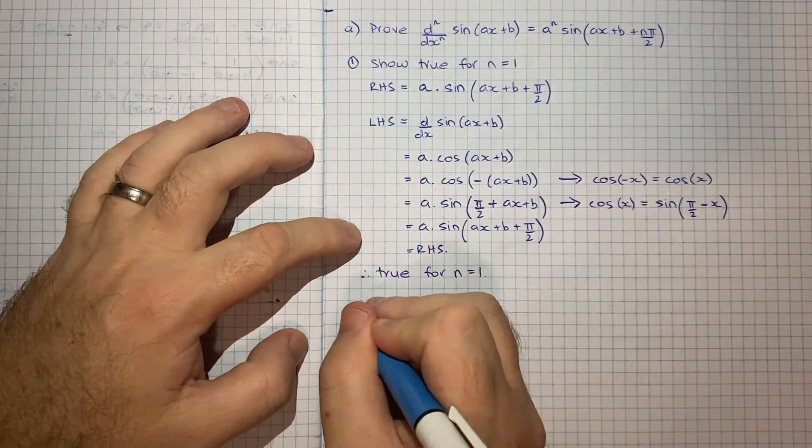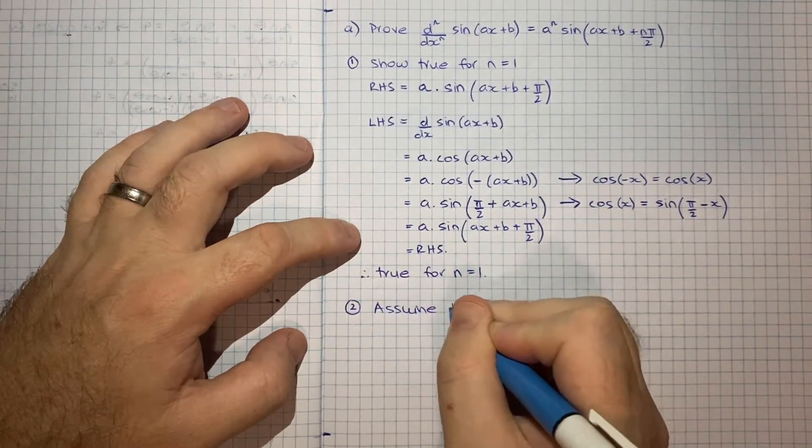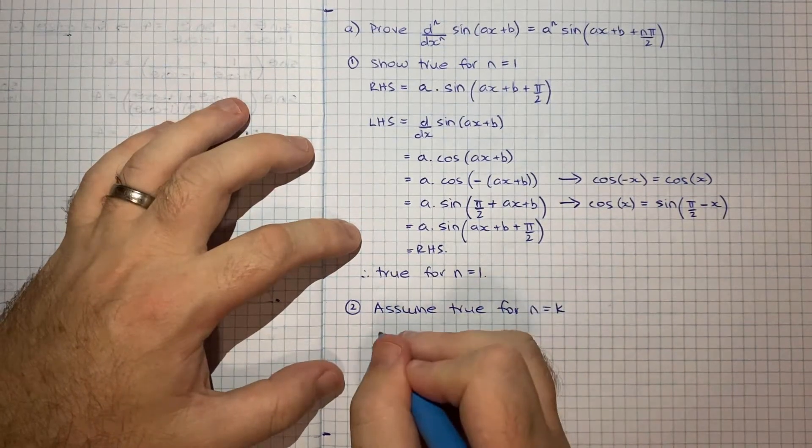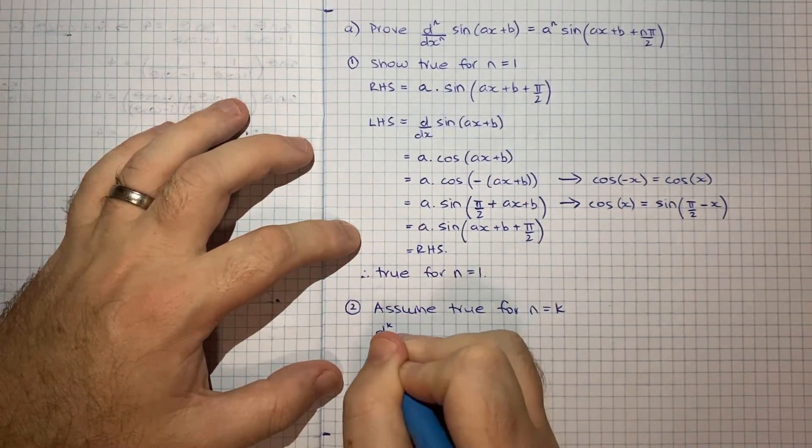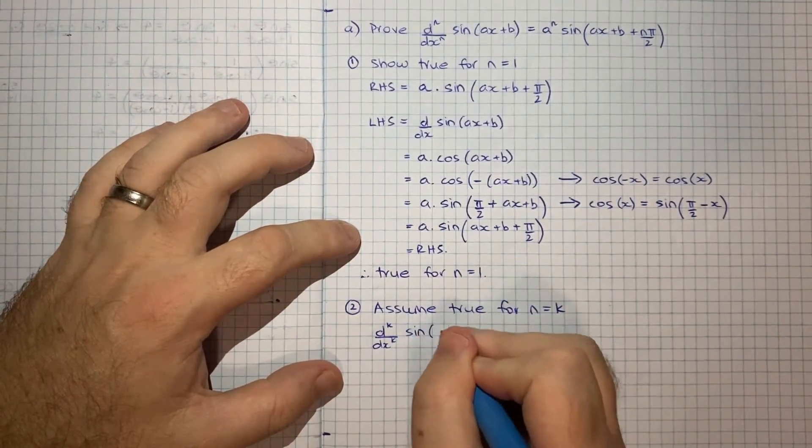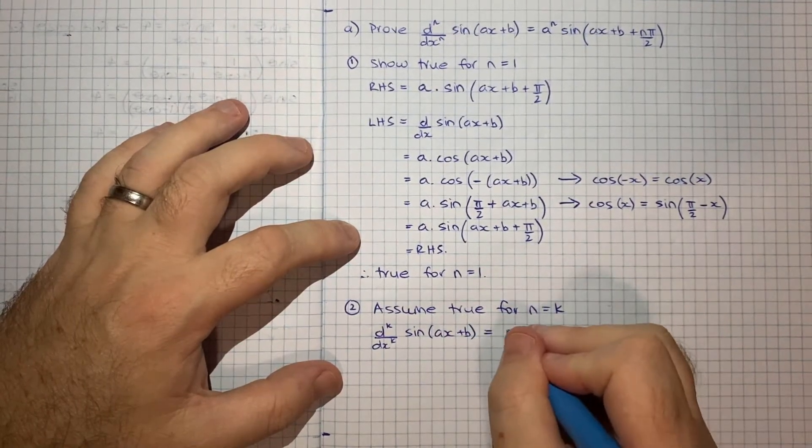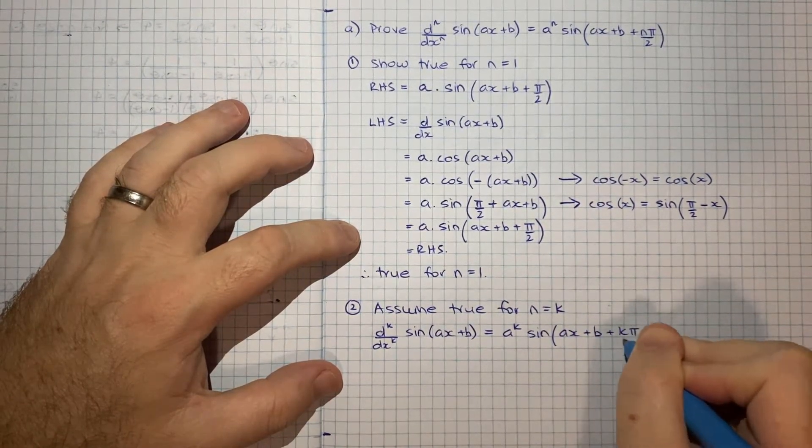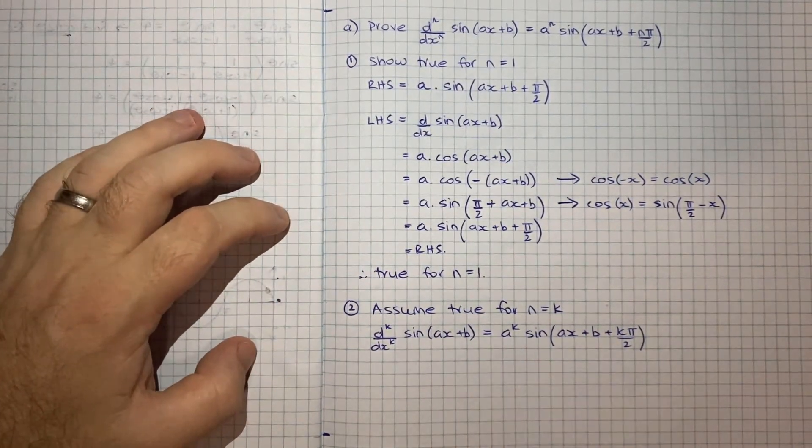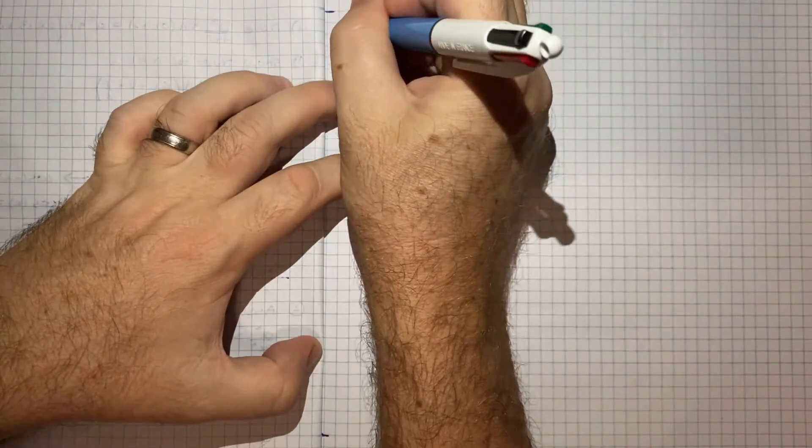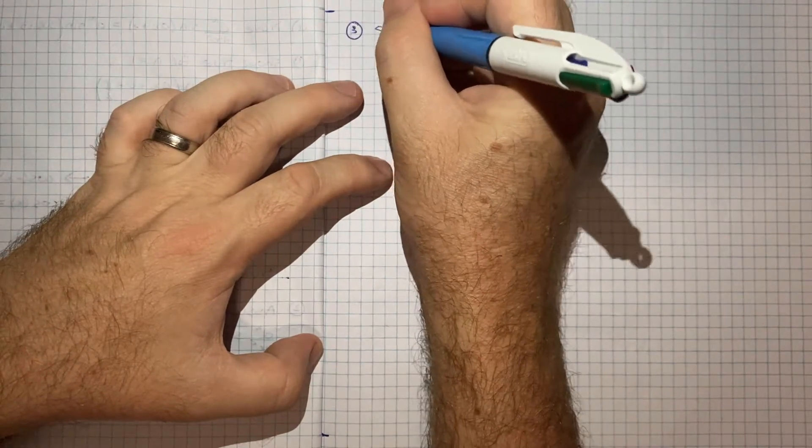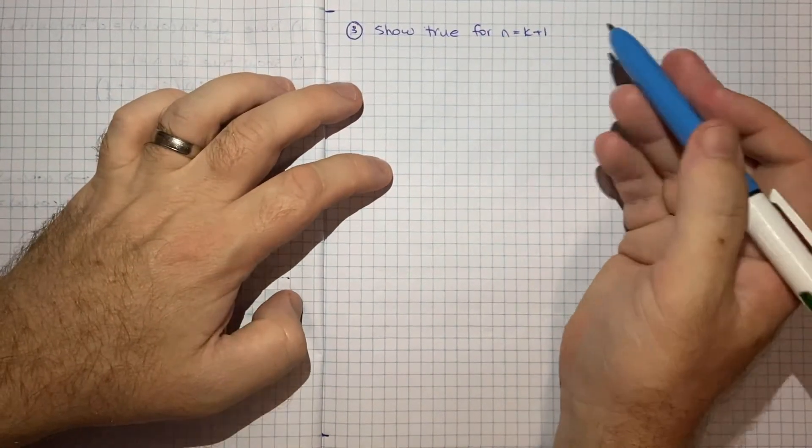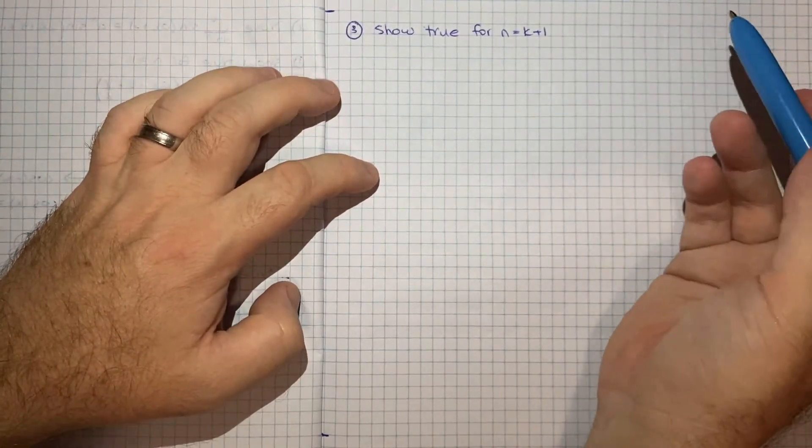So step 2 of the induction will be to assume true for n is equal to k, sum integer k. And so what that effectively means is that we can write d^k/dx^k. So the kth derivative of sin(ax+b). We're going to assume that that is equal to a^k times sin(ax+b+kπ/2). So that's step 2. I might turn over for step 3 because I'll need some more space. But step 3 of our induction will be to then show that this relationship is true for n is equal to k+1. And then from there we can use the process of induction to then conclude that it must be true for all n.